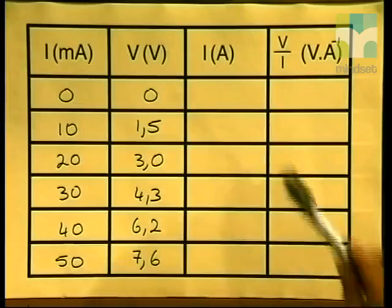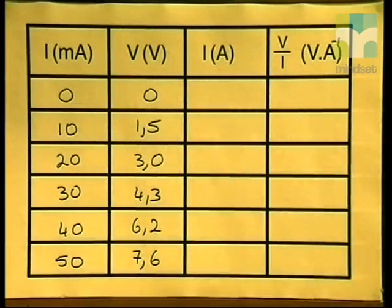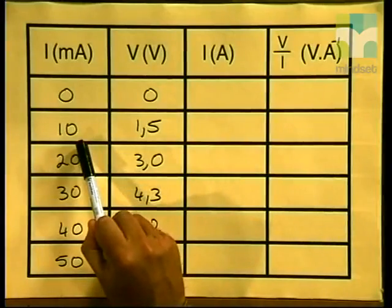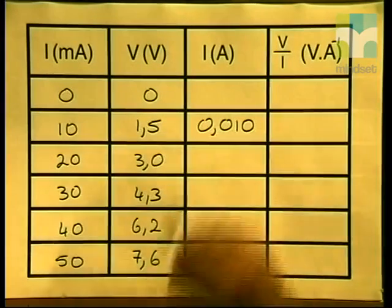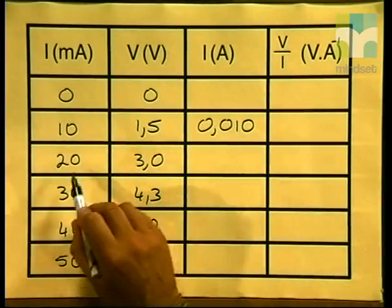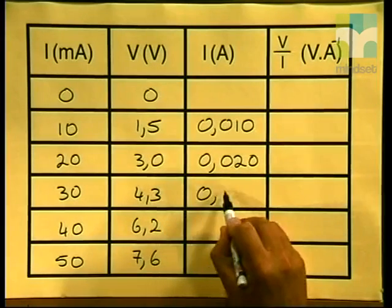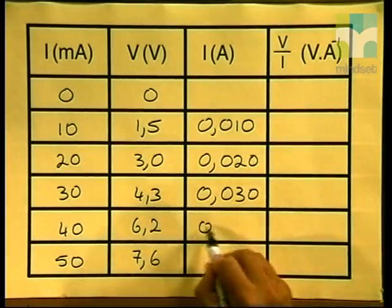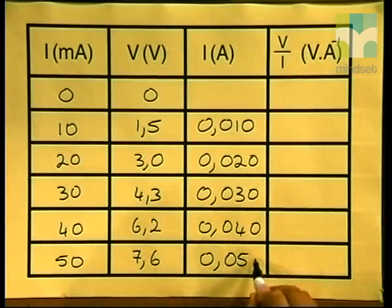Here I've introduced a third column in the table, which will allow us to work out the current measured in our SI unit of amperes. To convert milliamperes to amperes, we must divide the value by 1000. So: 10 mA gives 0.010 A; 20 mA gives 0.020 A; 30 mA gives 0.030 A; 40 mA gives 0.040 A; and 50 mA gives 0.050 A.